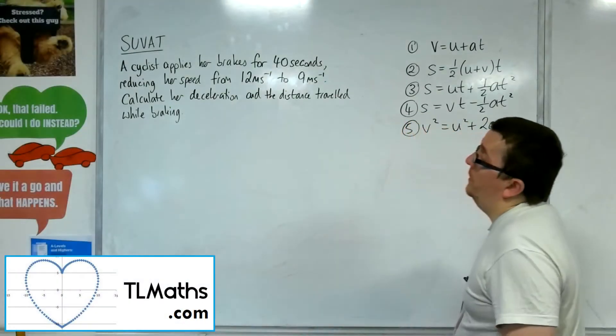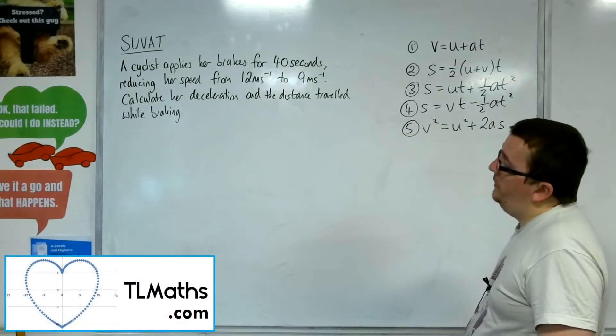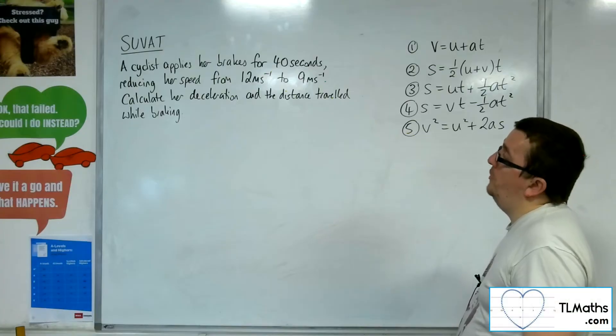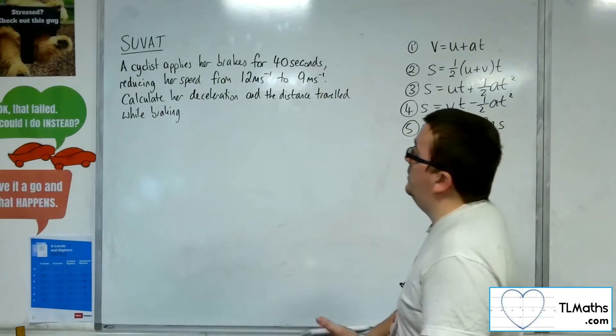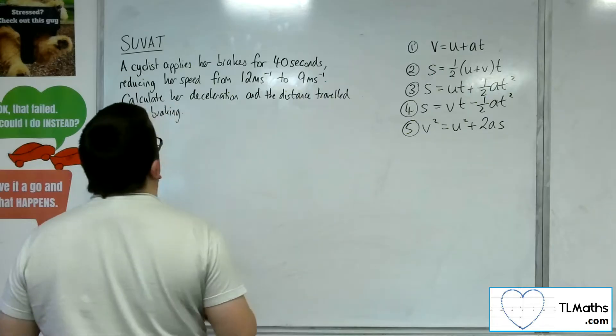So in this problem, we've got a cyclist who applies her brakes for 40 seconds, reducing her speed from 12 metres per second to 9 metres per second. Calculate her deceleration and the distance travelled while braking.